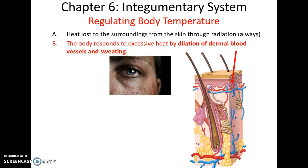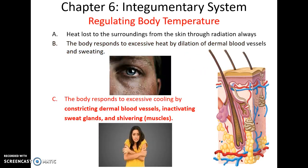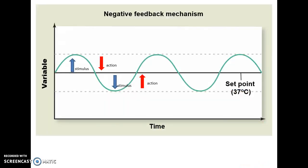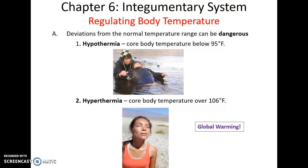Regarding thermoregulation: when we get hot, our dermal blood vessels dilate, increasing blood flow to the skin and carrying heat out of the body. We also sweat, and sweat evaporates, getting rid of additional heat. When we get cold, those dermal blood vessels constrict, less blood flows to the surface of the skin, our sweat glands become inactive, and our muscles may shiver to generate heat. This is all about negative feedback, trying to return to our ideal set point. Hypothermia is when core body temperature drops below 95°F, which is very dangerous and can lead to death. Hyperthermia is when core body temperature rises above 106°F, which is also potentially fatal.